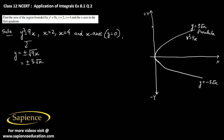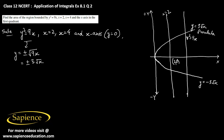We should also draw the straight line x equals 2, which is parallel to the y-axis and intersects the x-axis at (2, 0). And one more straight line, x equals 4, also parallel to the y-axis, intersects the x-axis at (4, 0).